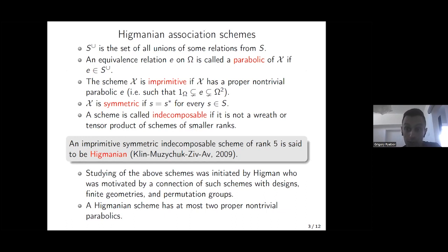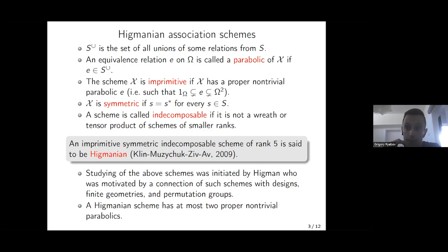Let's move further to Higmanian association schemes. To define such a scheme we need some more concepts. By S-cup we denote the set of all unions of some relations from our partition S. An equivalence relation E on omega is called a parabolic of X if it is a union of some basis relations of our scheme. Every scheme has two trivial parabolics: the diagonal of omega square and the Cartesian square. A scheme is called imprimitive if it has a proper non-trivial parabolic E.